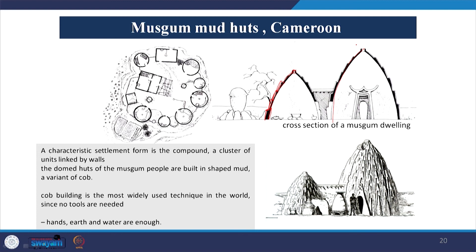Another very interesting feature of this construction is that the mud procured from the termitaries contains a gum-like substance released by the termites, which is also mixed within the building material. This provides a waterproof layer on top. Even when it rains mildly, these huts are not damaged by moisture because they have become almost waterproof from the top.